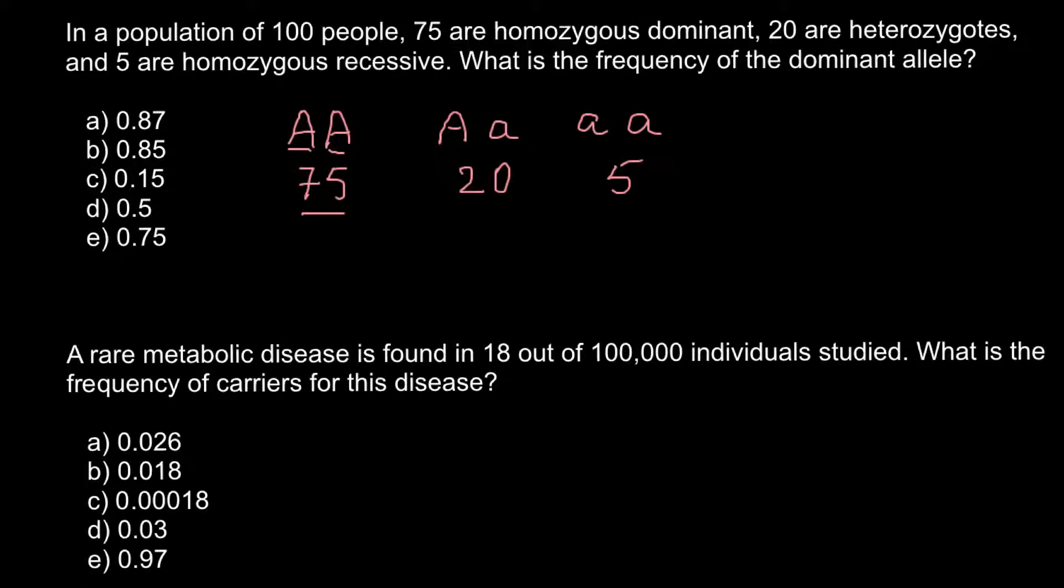Because we are diploid, we have 1 chromosome with 1 allele from our mother side, another one from our father side. So together, these 75 people have 150 alleles, that is capital A.